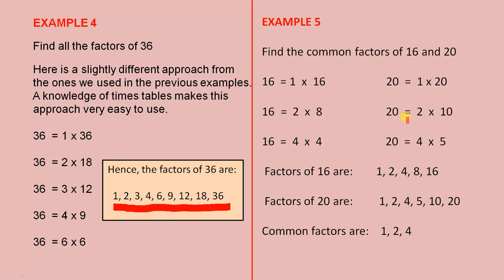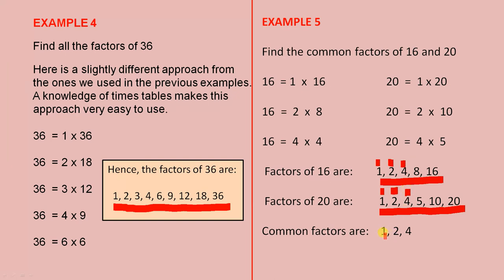The factors of 20: 20 is 1 times 20, also 2 times 10, and also 4 times 5. This working helps us find those factors of 20. Now, which ones are common? There's a 1 in both, a 2 in both, and a 4 in both. So 1, 2, and 4 are the common factors of 16 and 20.